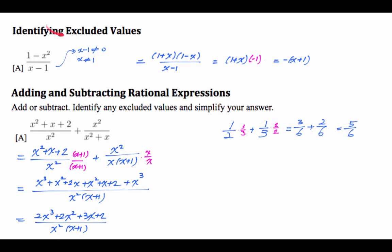But we talked about the excluded values. So the denominator cannot be 0, and the denominator is equal to 0 when x is equal to 0 or x is negative 1. So we had to write that down. Basically, we just set the denominator equal to 0 and say we can't have that.